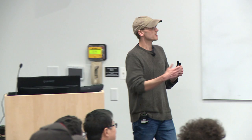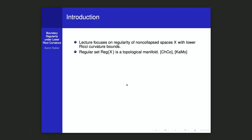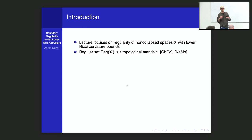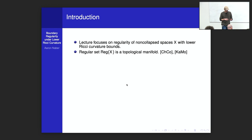Our spaces, whether limits of manifolds or RCD spaces, can be broken into a regular part and singular parts, just like any good solution of a PDE. You have to be a little careful because having a lower Ricci bound — not a two-sided bound — is more like a sub-solution to an equation. Nonetheless, the regular set turns out to be a topological manifold: an open set with a manifold structure.